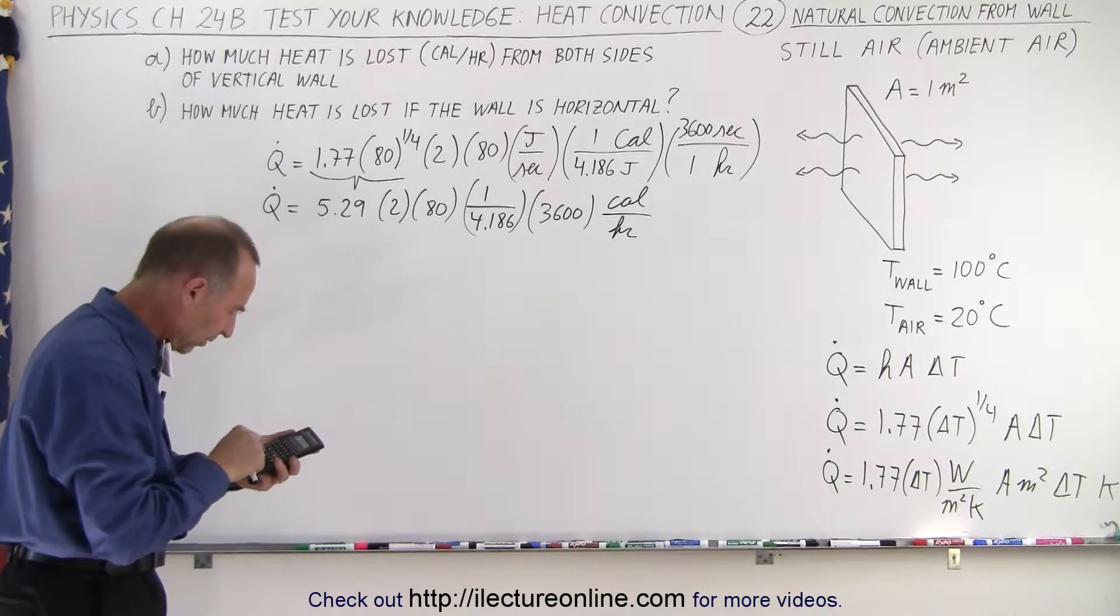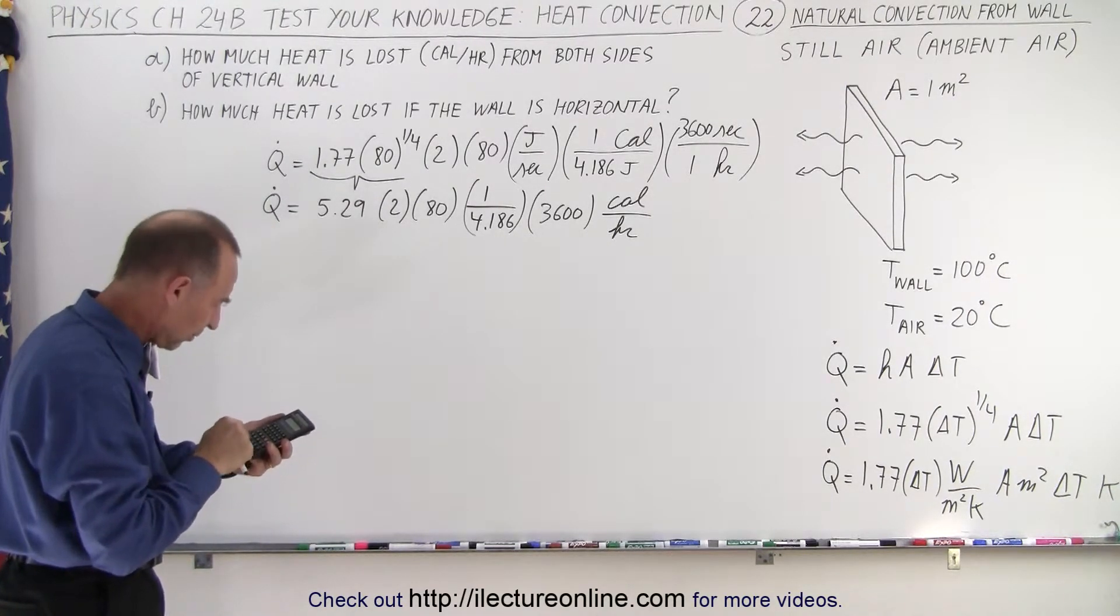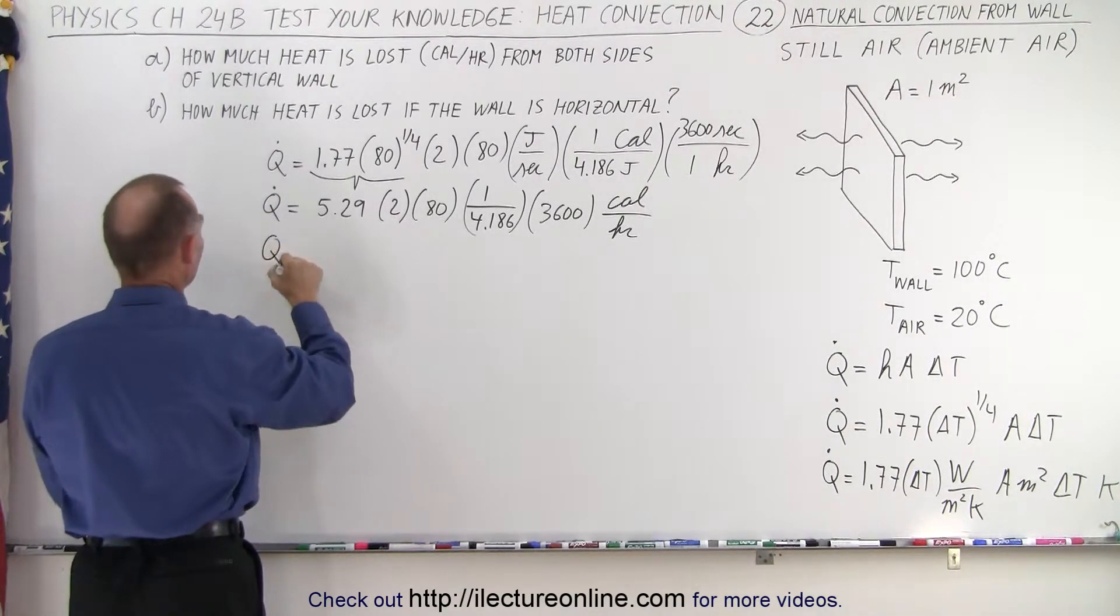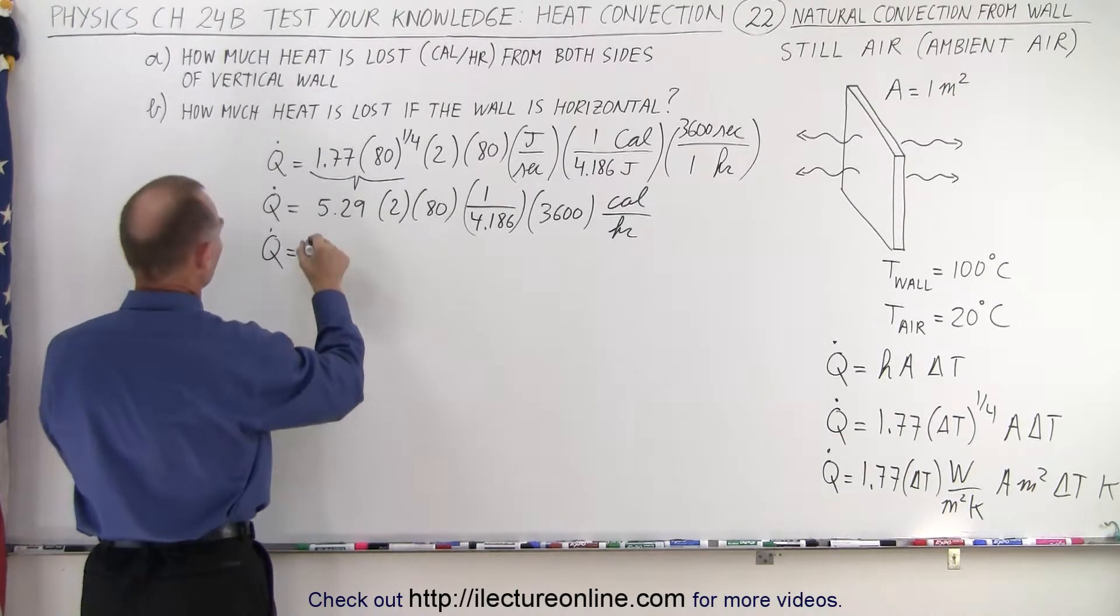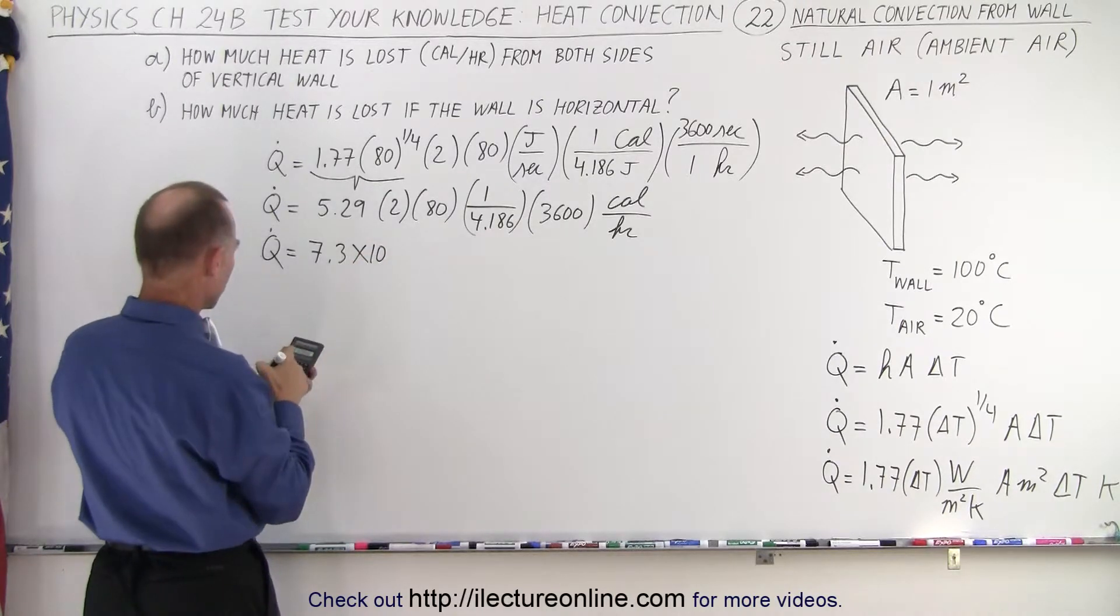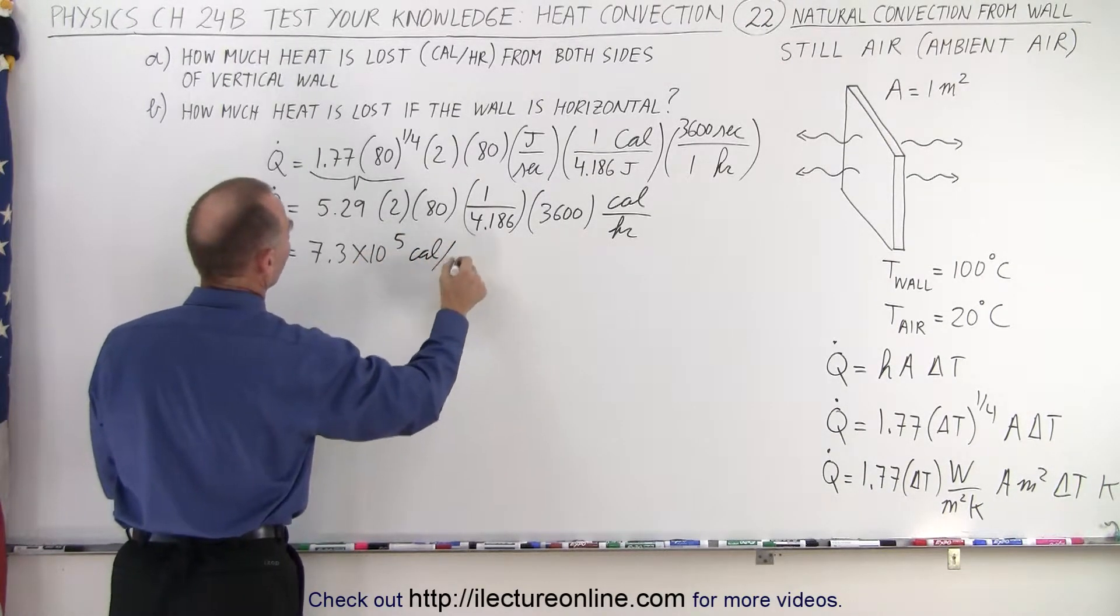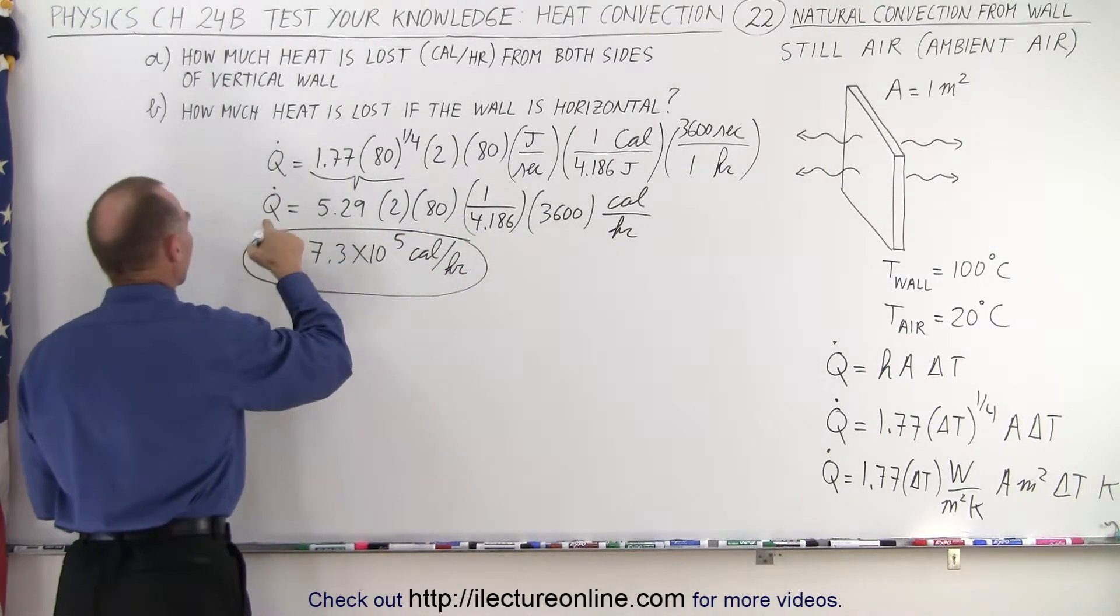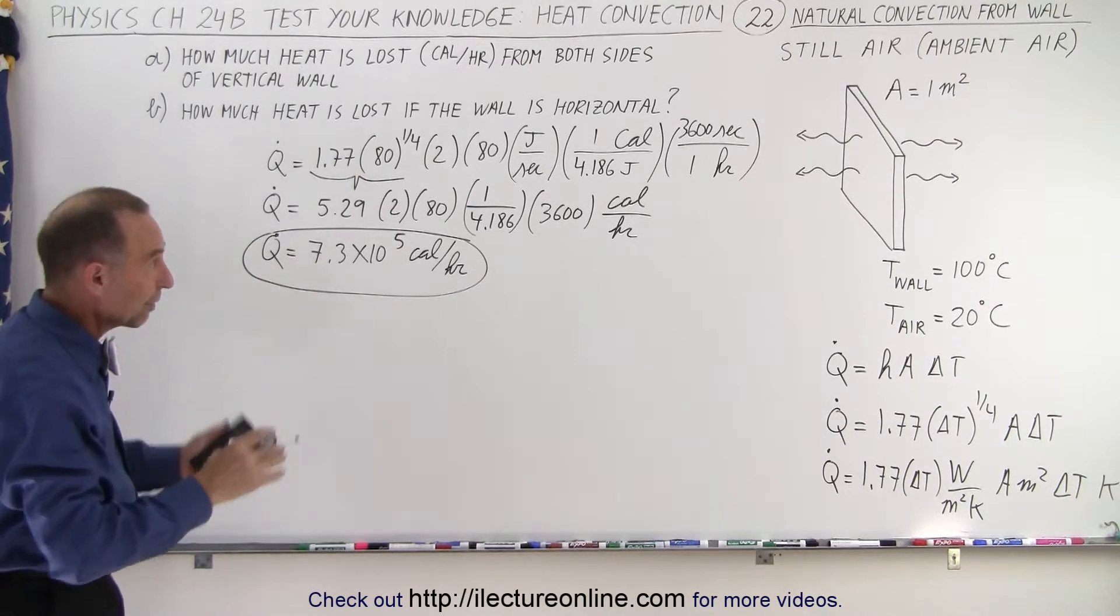So times 160 and divide by 4.186 and then times 3600 equals, and we get Q dot is equal to about 7.3 times 10 to the fifth calories per hour. I need my dot over there. There we go, Q dot. That's the amount of heat that will flow away from the wall.